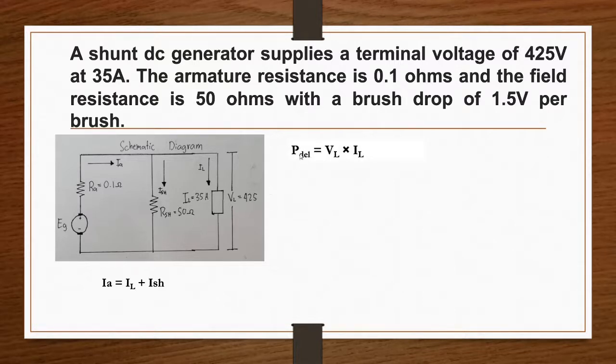Finding for power delivered: power delivered is equal to load voltage times load current. Our load voltage is 425 volts times our load current of 35 ampere. So our power delivered is 14,875 watts.